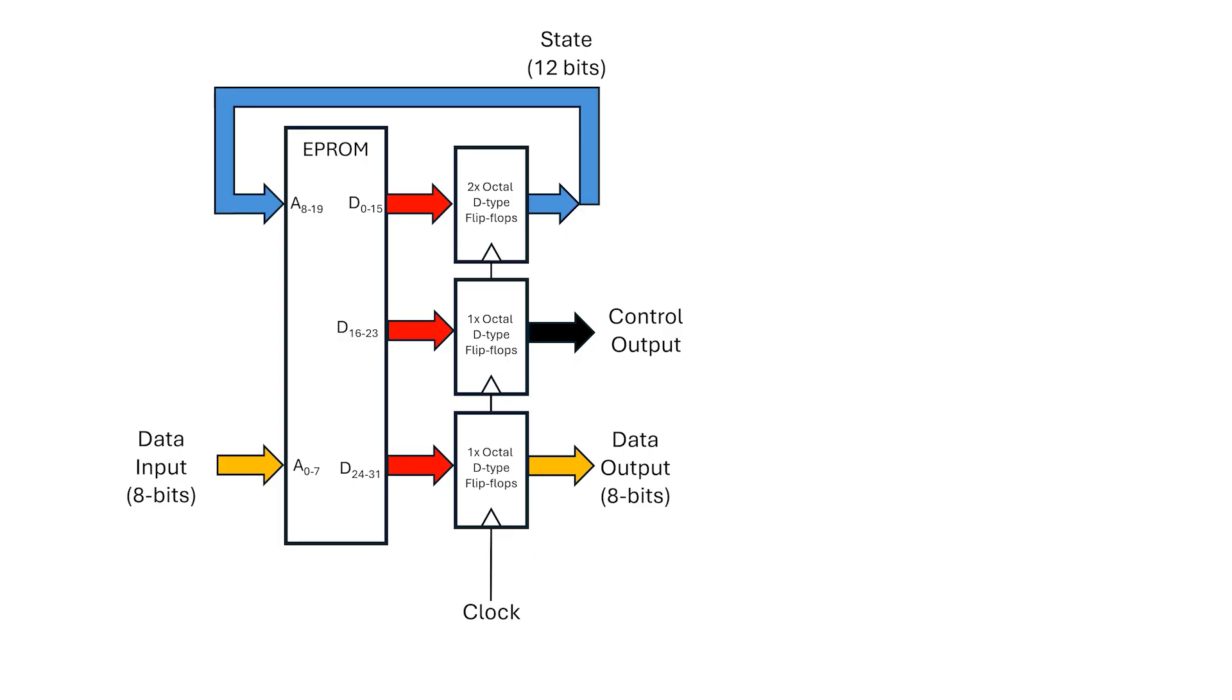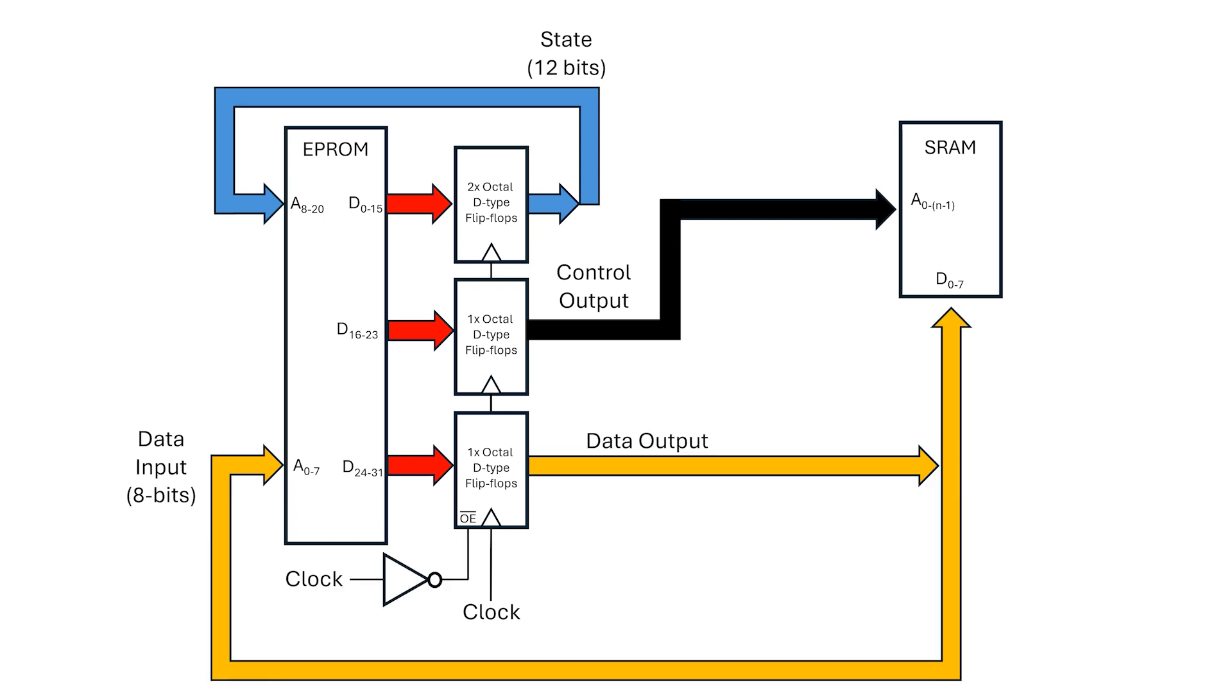So far, we have a rulebook, which is a finite state machine based on an EPROM, and the notepad which is a static RAM. But how do we actually connect them together? The simplest way is just to use some of our remaining outputs from the D-type flip-flops to drive the static RAM address lines. We can also create a data bus shared by the static RAM data lines, finite state machine output, and the finite state machine input.